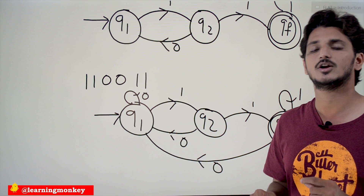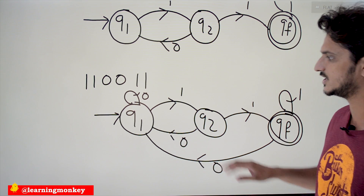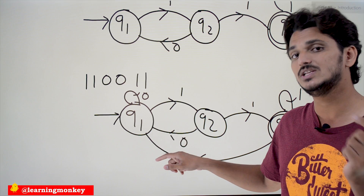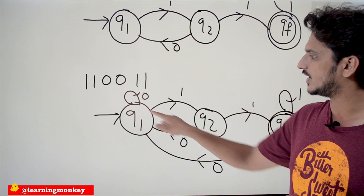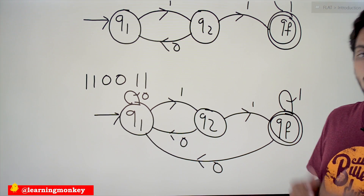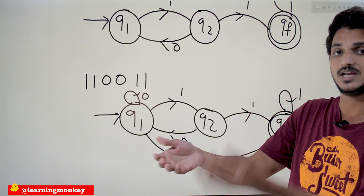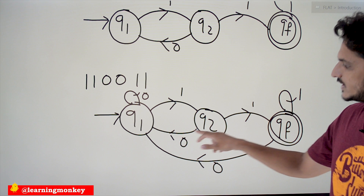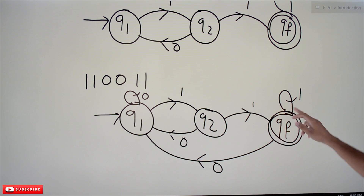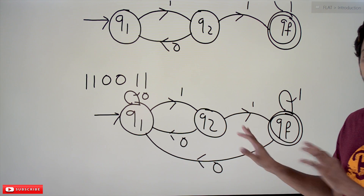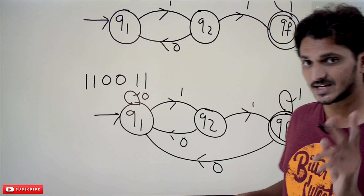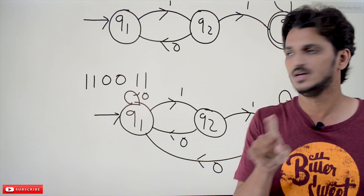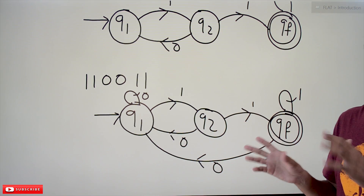We call this a Deterministic Finite Automata. It follows two conditions we discussed previously. First: on each state we have to mention the transition for each input symbol. On q1, the two input symbols zero and one both have defined transitions. On q2, zero and one are both mentioned. On qf, one and zero are both mentioned. Second condition: on q1, if you take any input symbol it moves to only one state — we are never moving to more than one state.